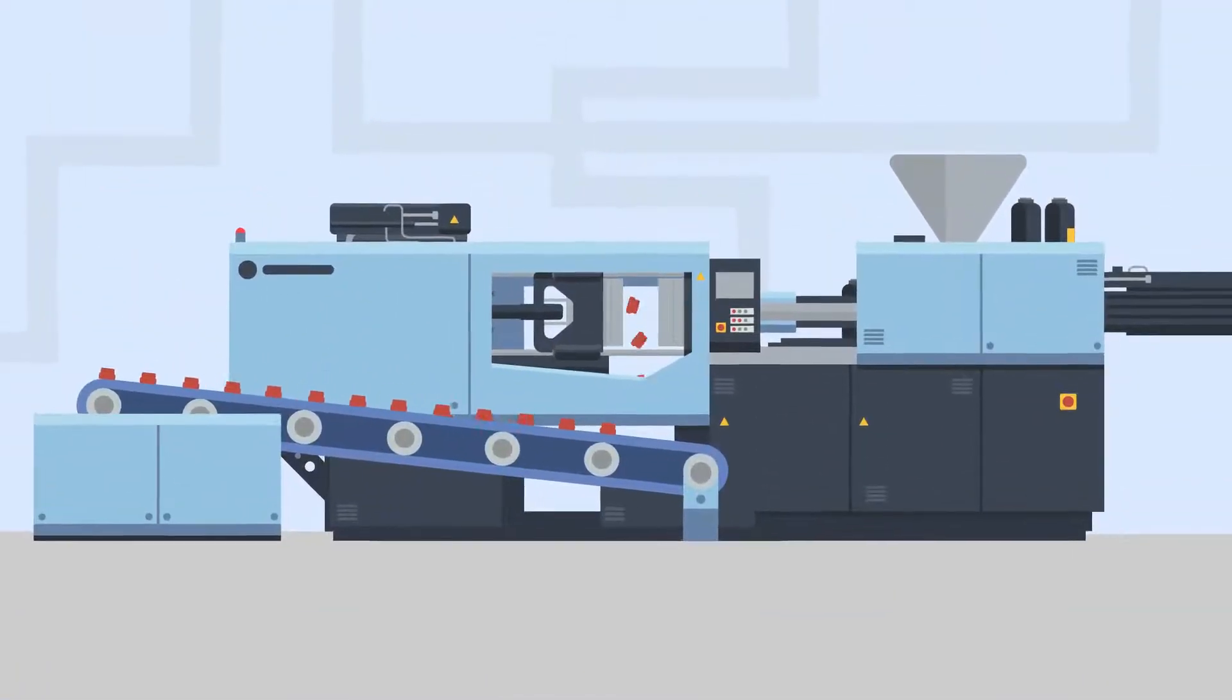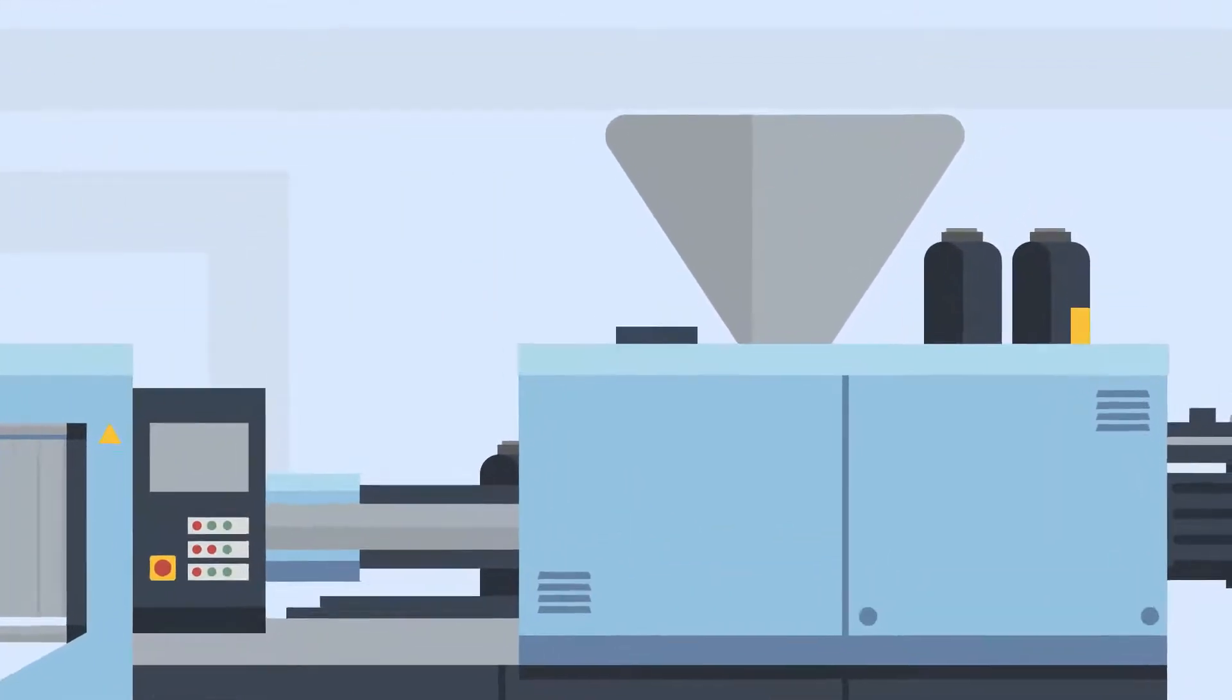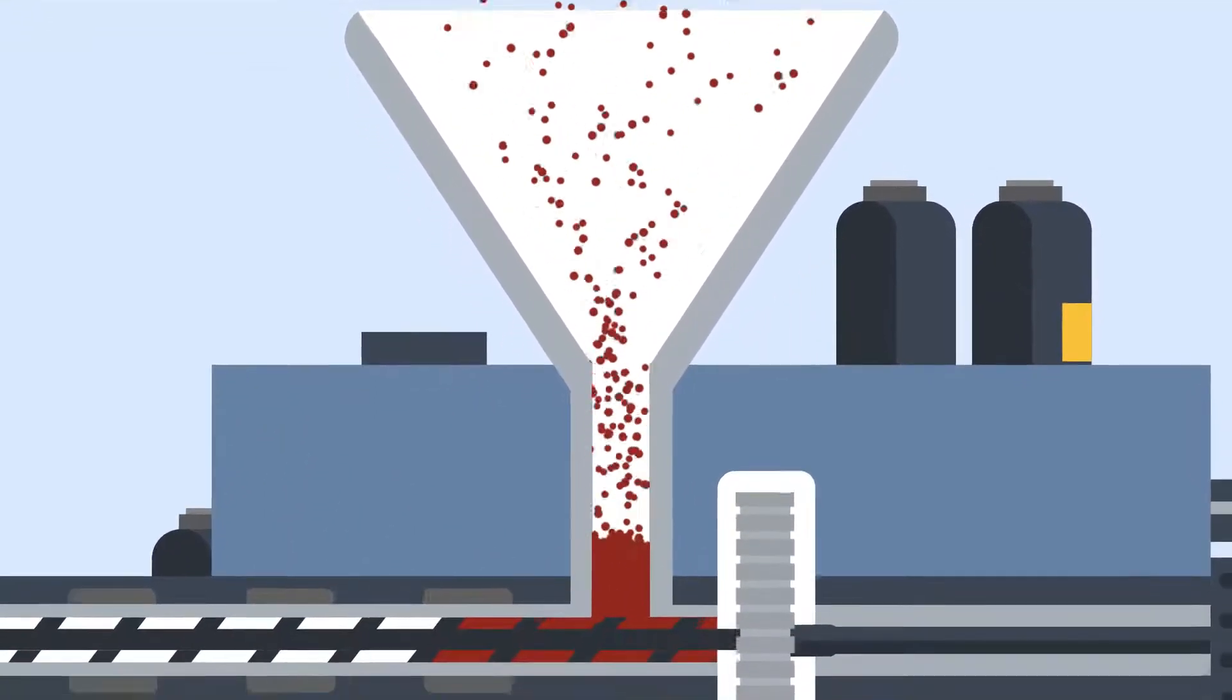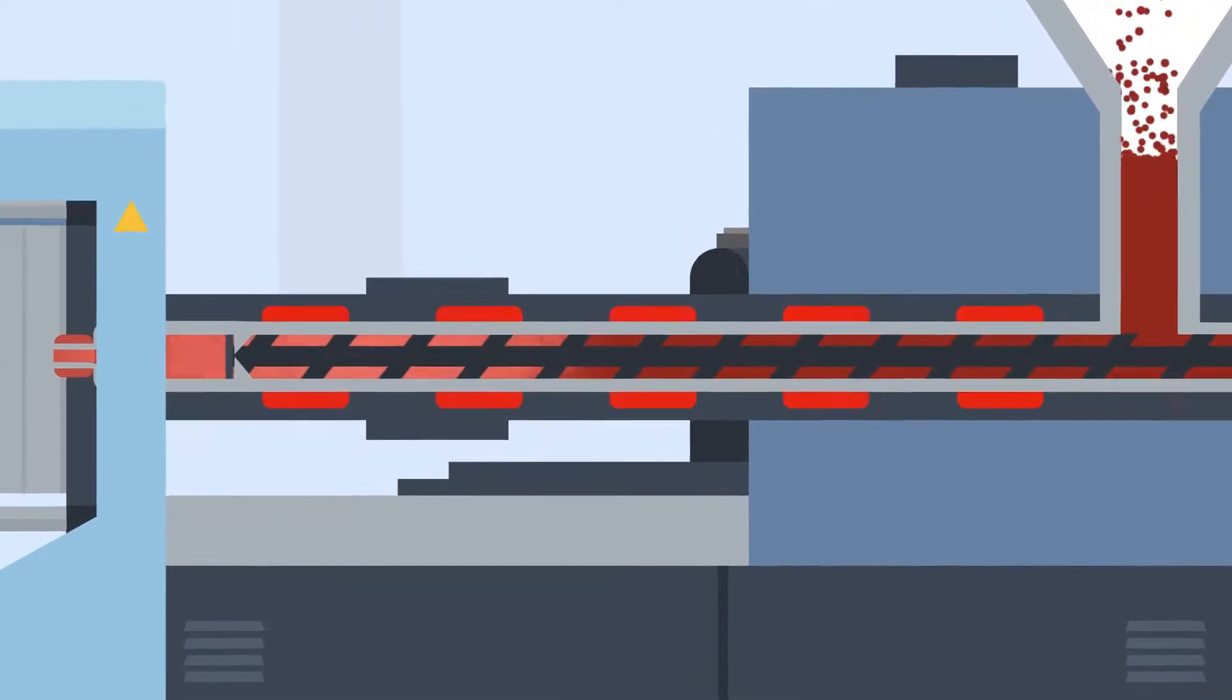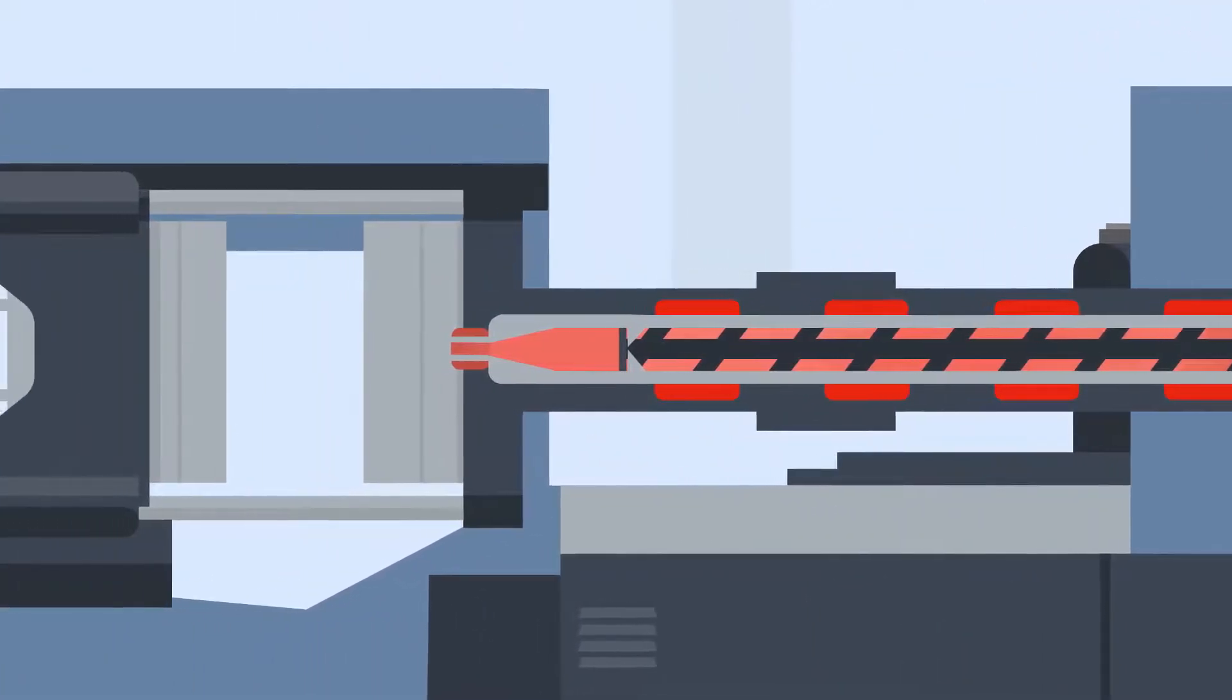So let's take a look at how the injection molding process works. First, raw plastic pellets are poured into the hopper at the top of the machine. This can be one type or a combination of different plastics. The pellets are then heated within a temperature-controlled cylinder, called the machine barrel, until it is molten.